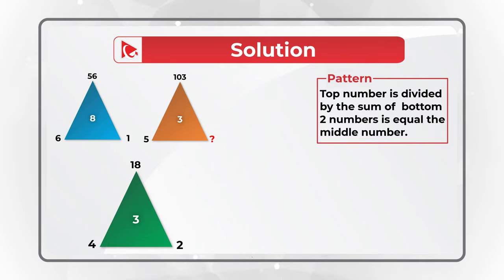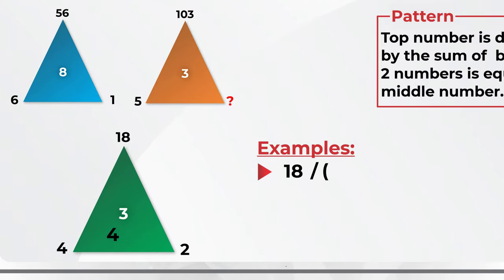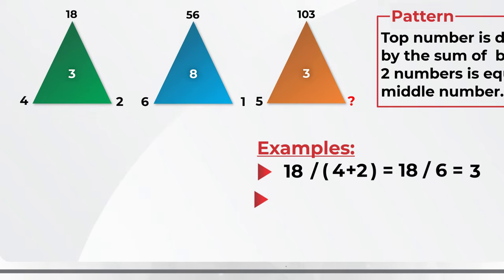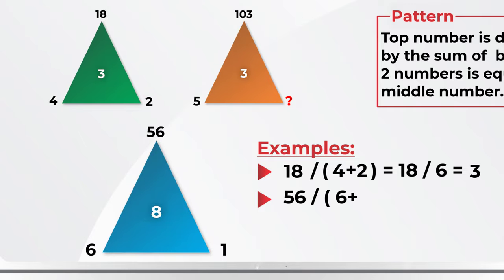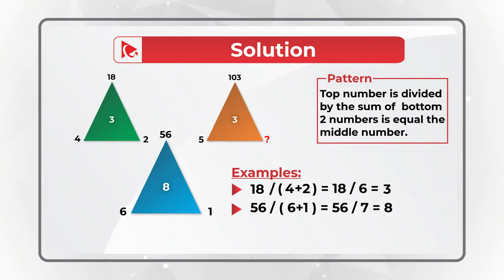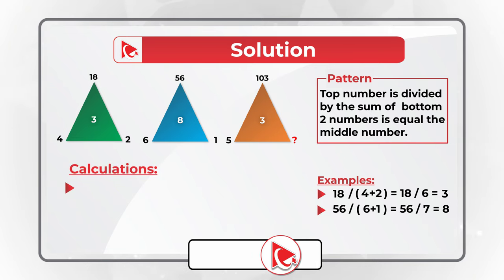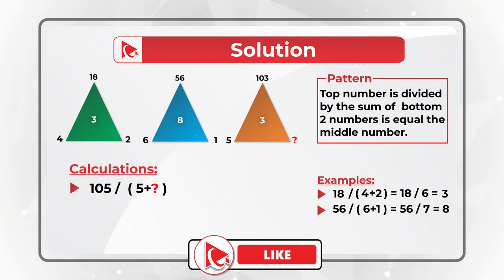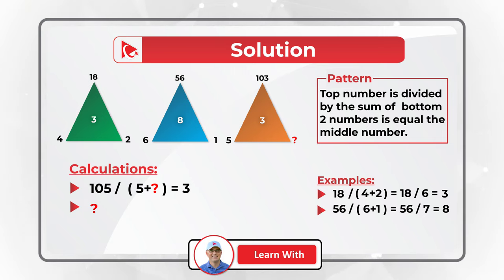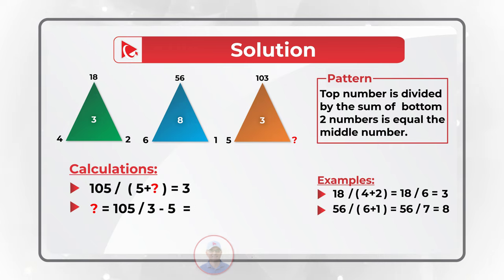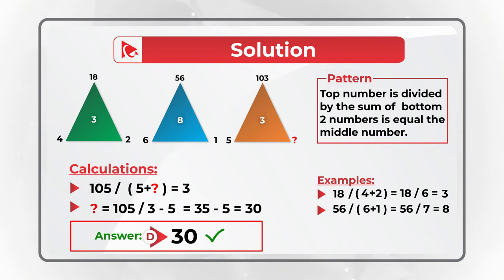Let's look at the first two examples. 18 divided by (4 plus 2) equals 18 divided by 6, which equals 3. In the second triangle, 56 divided by (6 plus 1) equals 56 divided by 7, which equals 8. So to calculate the missing number: 105 divided by (5 plus the missing number) equals 3. We divide 105 by 3 and subtract 5: 35 minus 5 equals 30. So the answer is choice D: 30.